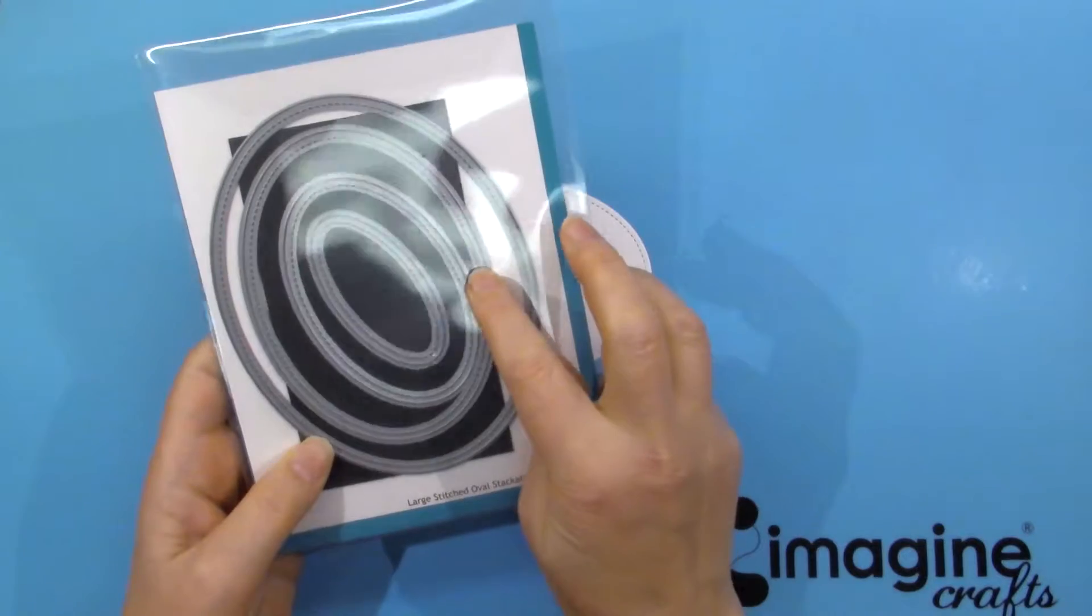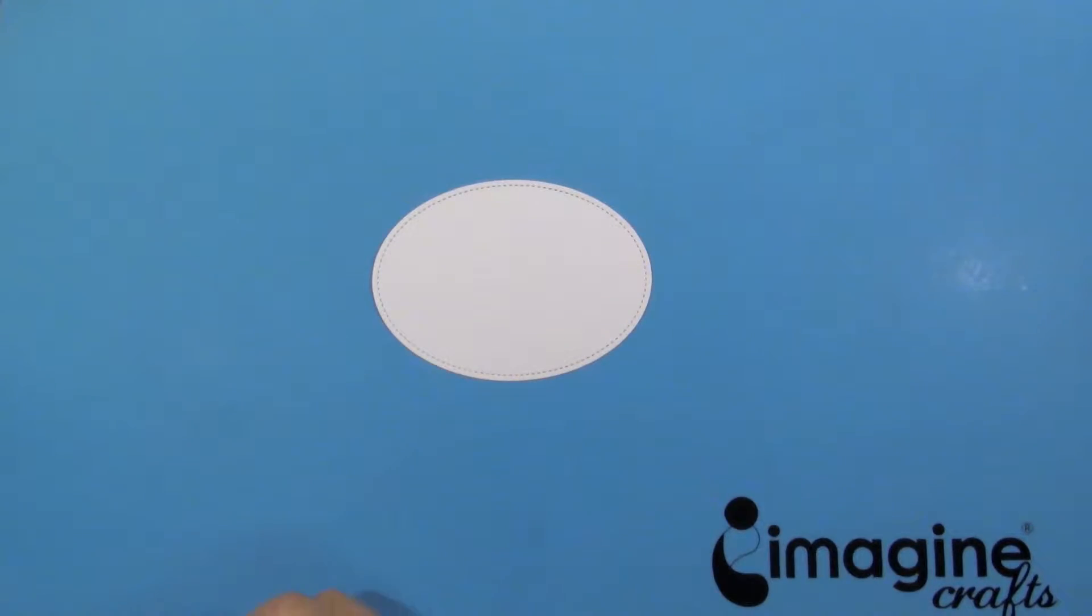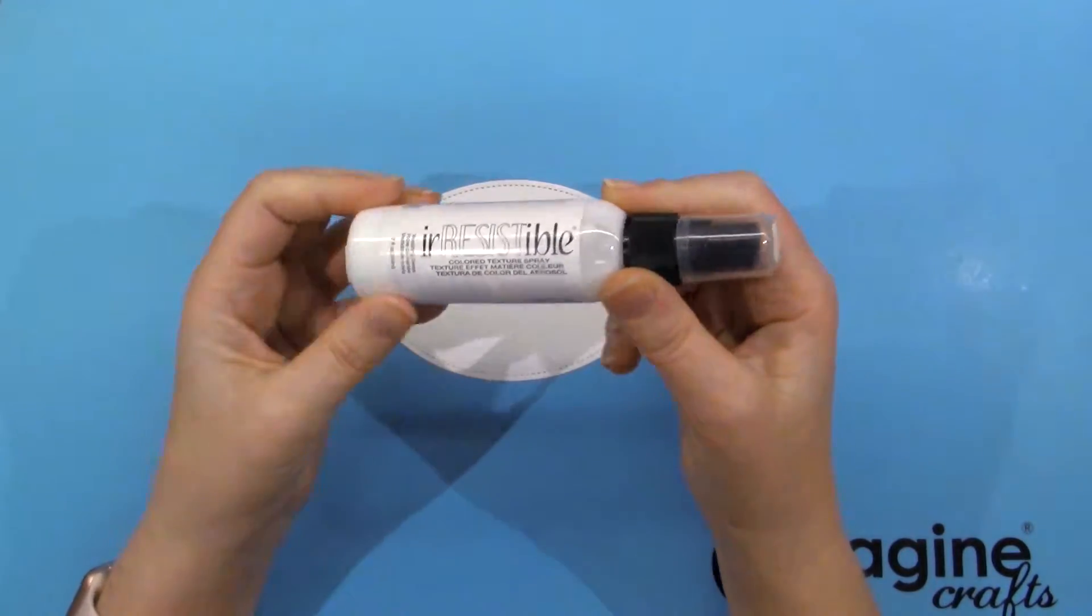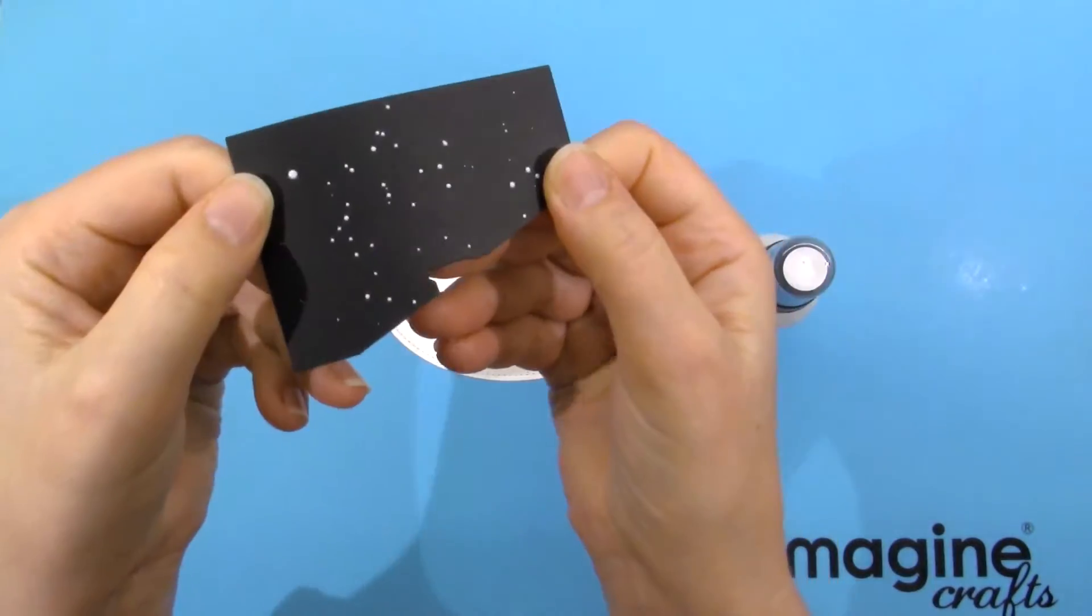I used these stitched oval dies to die cut this white cardstock. Now I'm going to create a snowy background using irresistible texture spray and wedding dress. Here's my practice sheet. I did it on black paper so you could see the dots.